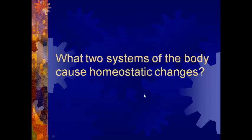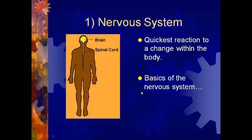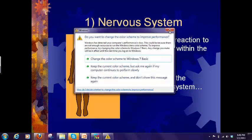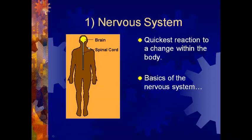There are two main systems of the body that cause homeostatic changes. The first is the nervous system. You have receptors throughout your body, and your brain and spinal cord are your control center — especially your brain. The nervous system makes really quick changes to maintain homeostasis. For example, you turn the lights on and your pupils constrict; you turn the lights off and your pupils dilate. Your CO2 levels change and your brain causes changes to maintain homeostasis. We'll cover the nervous system in much more depth later — you'll have a whole test on it.